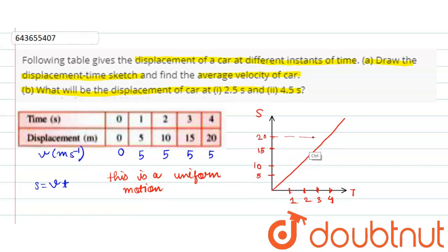Now we have to calculate the displacement of the car at 2.5 seconds. At 2.5 seconds, the displacement will be in between 15 and 10, so it would be 12.5 meters. So at T equals 2.5 seconds, S equals 12.5 meters.